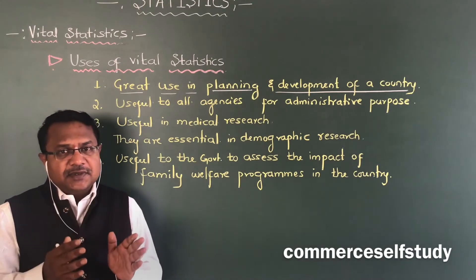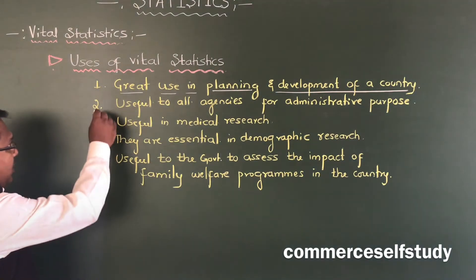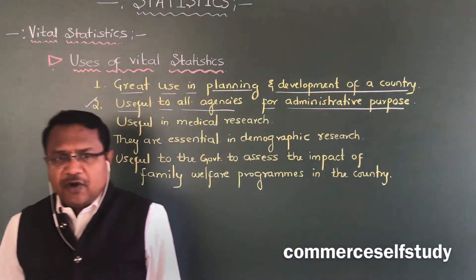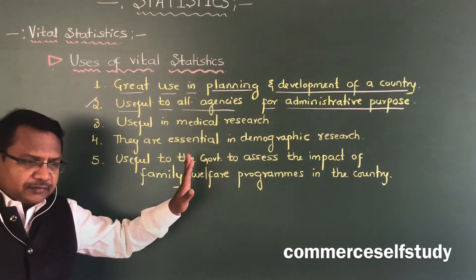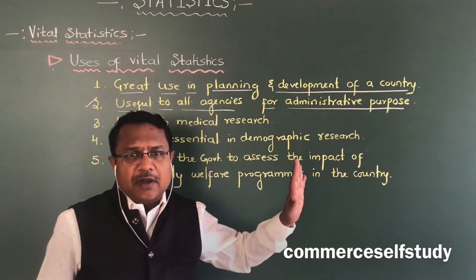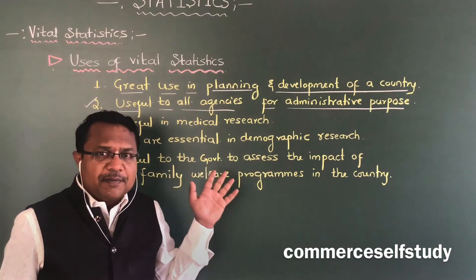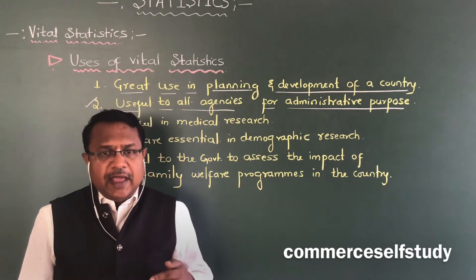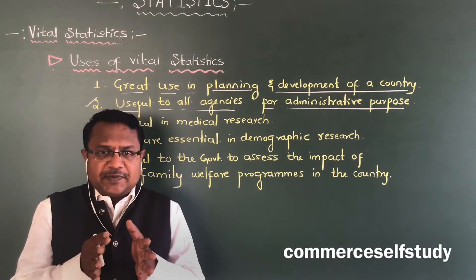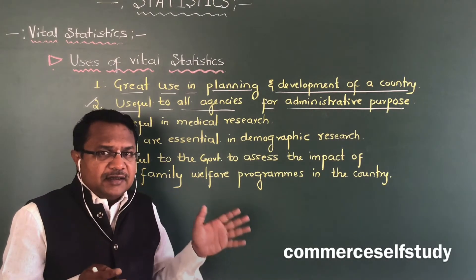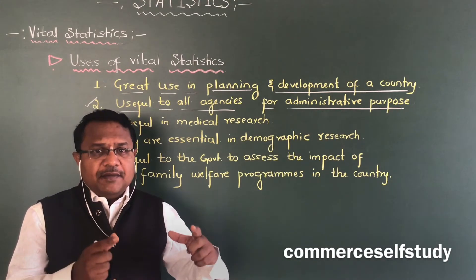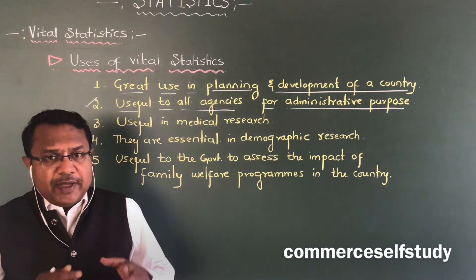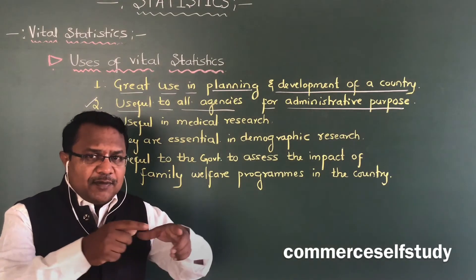The second use is: vital statistics is useful to all agencies for administrative purposes. For example, the home department or police department will come out with new police stations, recruit new police officers, and extend duty services. All these things will take place when they have vital statistics information — such as how many crimes are taking place in the city and how many accidents are taking place.